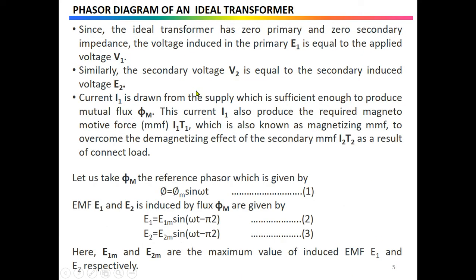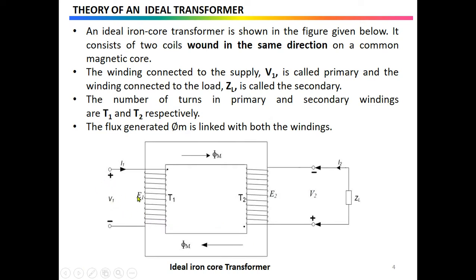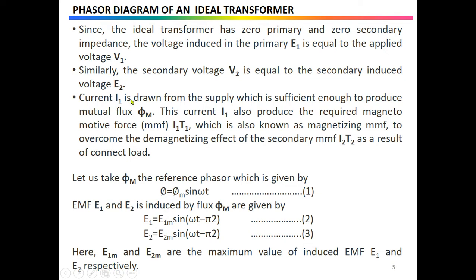Now we will look at the phasor diagram. Since we have an ideal transformer with zero primary and zero secondary impedance — no loss, no reluctance, no reactance in the coils — the voltage induced in the primary E1 is equal to the applied voltage V1. Similarly for the secondary, E2 equals V2. Current I1 is drawn from the supply, which is sufficient to produce mutual flux Φm, and this current I1 also produces the required magnetomotive force.